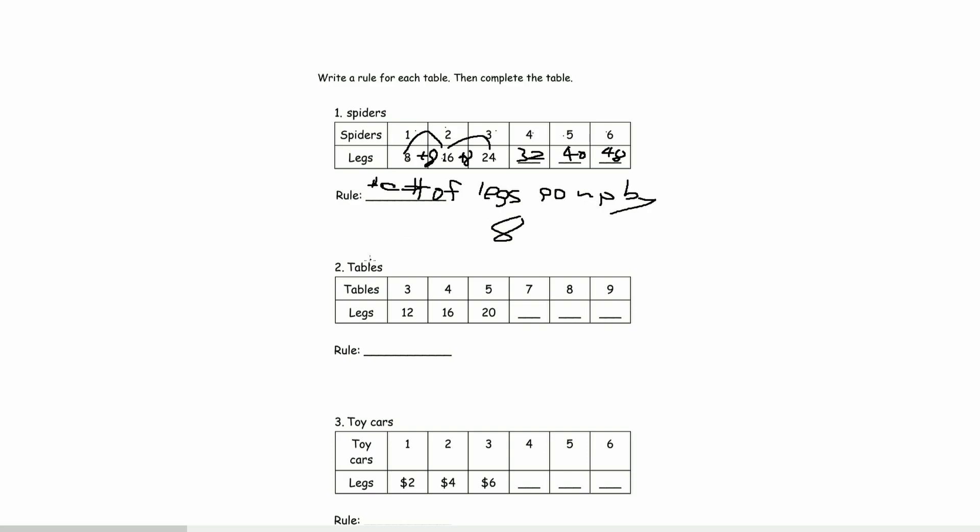And number 2. So we're talking about tables. We have 3 tables, 4, table 5, 6, 7. And we have 7 here. Okay, so from 3 to 4, that's plus 4. So each table has 4 legs.